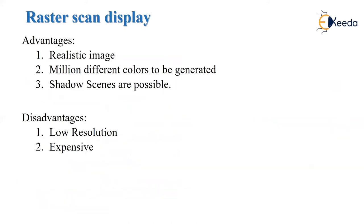The advantages of raster scan display are that it is used to produce realistic images, it can produce millions of different colors, and it can also produce shadow scenes because different colors can be assigned to individual pixels. The disadvantages are low resolution — as it is pixel-based, zooming the image causes it to become blurred. It is also quite expensive because operations must be performed pixel by pixel.